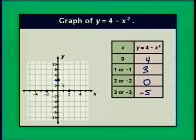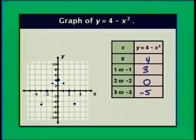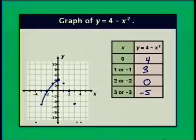Let's plot all the points including (1, 3), (negative 1, 3), (3, negative 5), and (negative 3, negative 5). When x is 4: y is 4 minus 16 equals negative 12, which is just below the grid. Similarly for x equals negative 4. Connecting the dots, we get a parabola that opens downward. All of our earlier examples had the parabola opening upward.